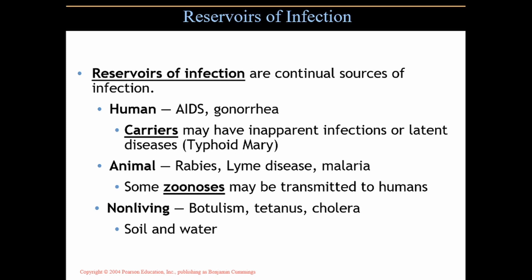A reservoir of infection refers to the continual sources of infection. For AIDS or gonorrhea, the reservoir would be us — humans. Carriers may have inapparent infections or latent diseases. Typhoid Mary is a classic example — she had an inapparent infection, was very resistant to being confined, was eventually caught and put into an infirmary for decades, but she was spreading typhoid to the population as a carrier without knowing it.